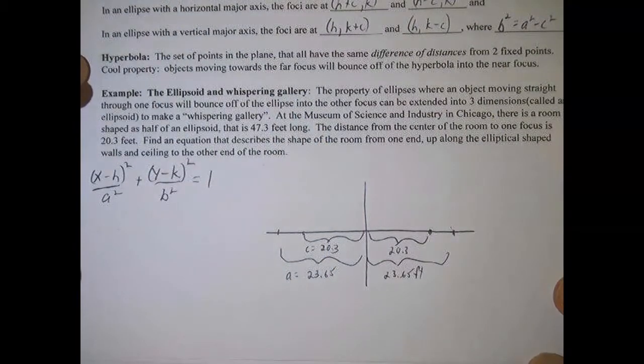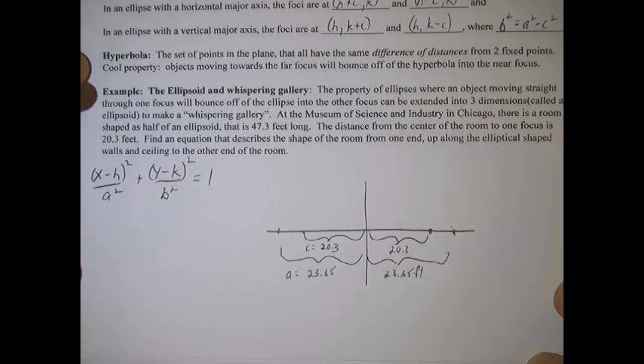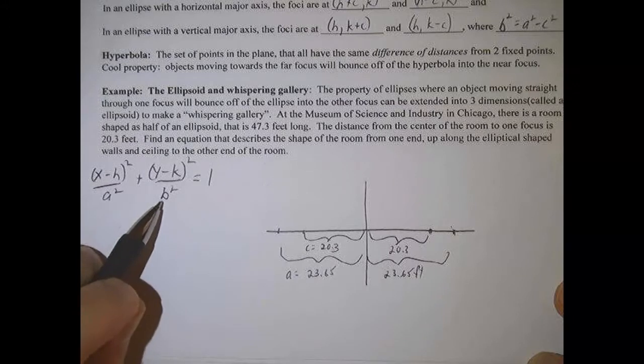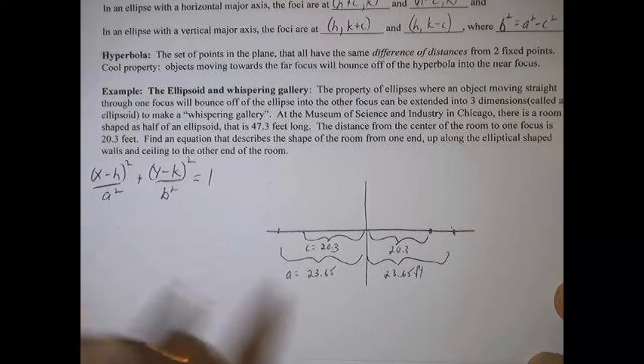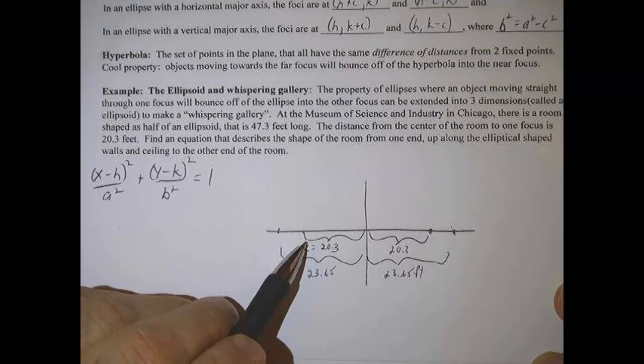So this is c. So we have a and c. And if we want to make an equation, we just need b. We need a and b, right? We don't need c for the equation. We're given c. That's where the focus is.